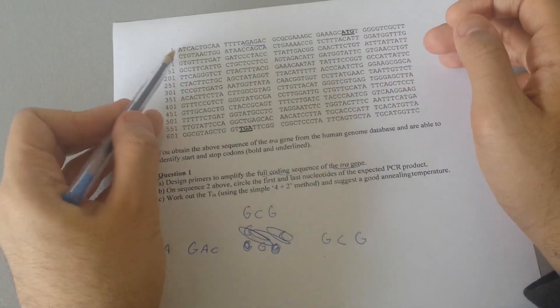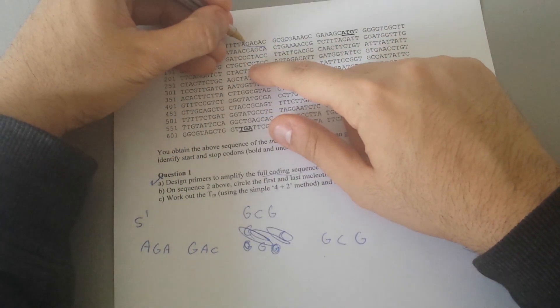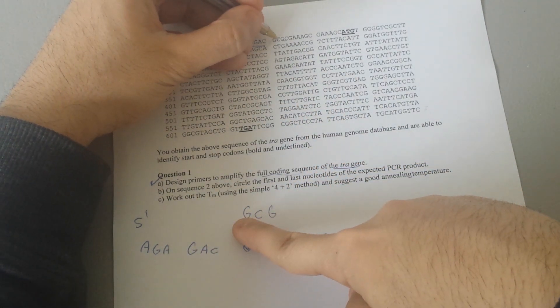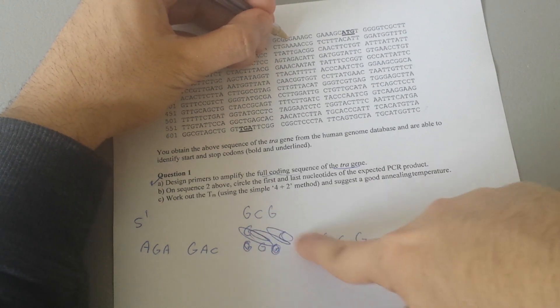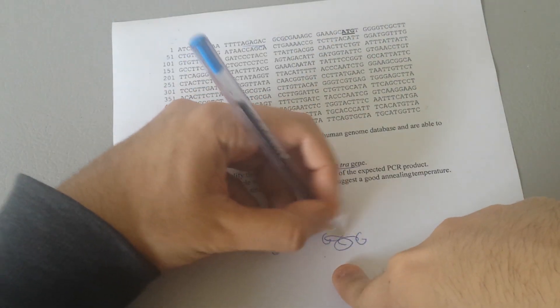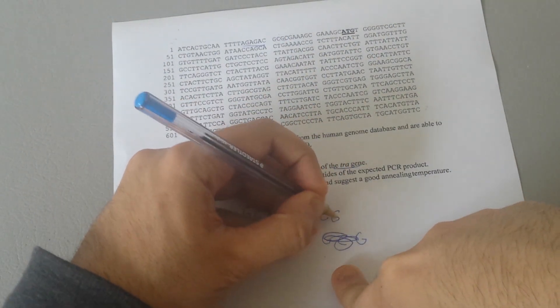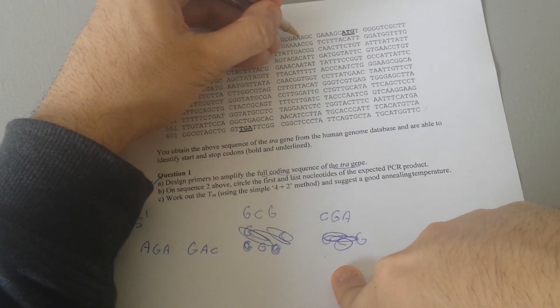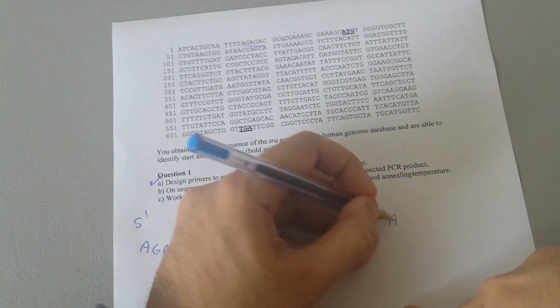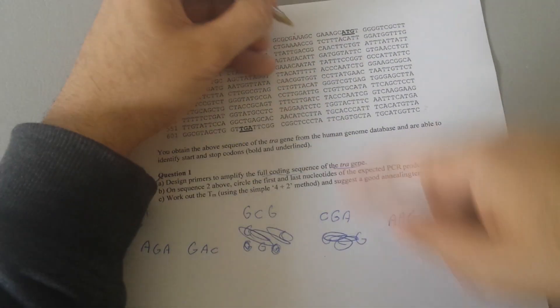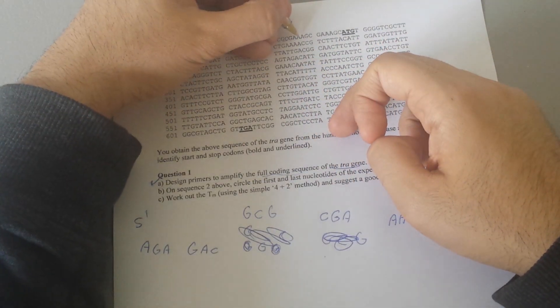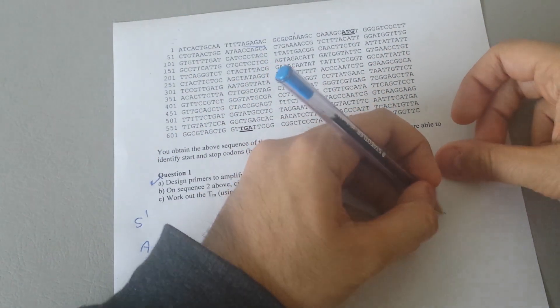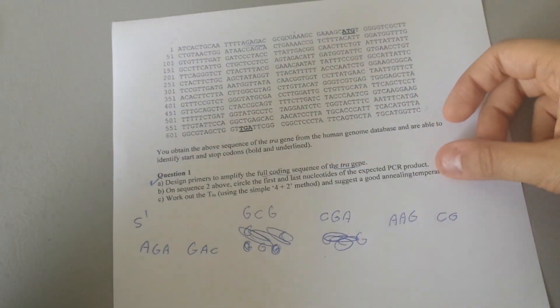So here I'm going to start from here: AGA, GAC, GCG, CCG, GGA, CGA, AAG, AAG. It's very important to read the primers specifically. AAG, AAG, CG, CG.